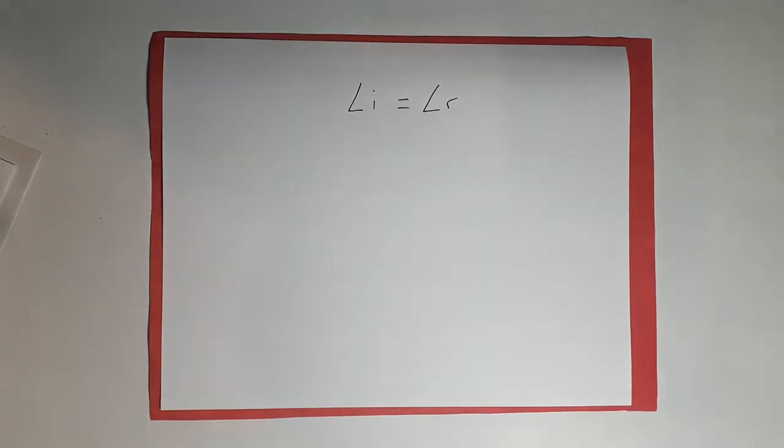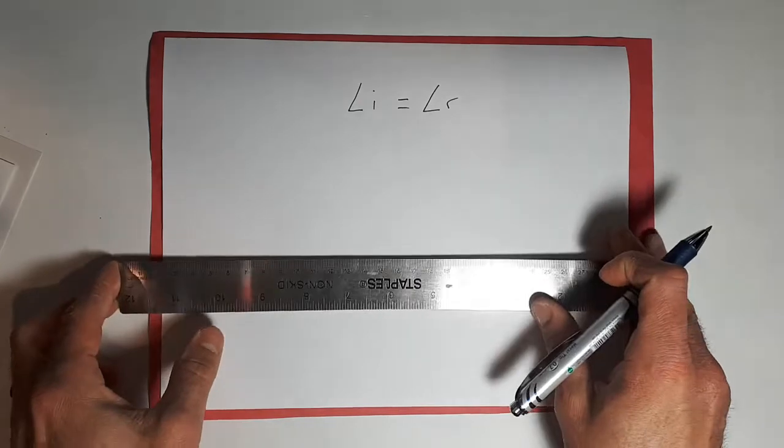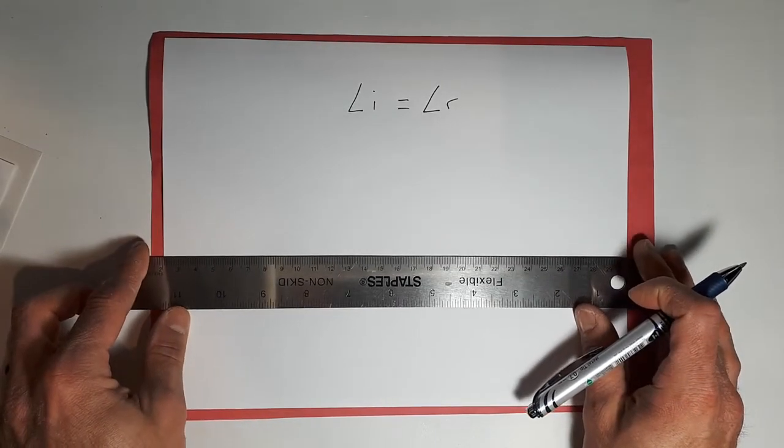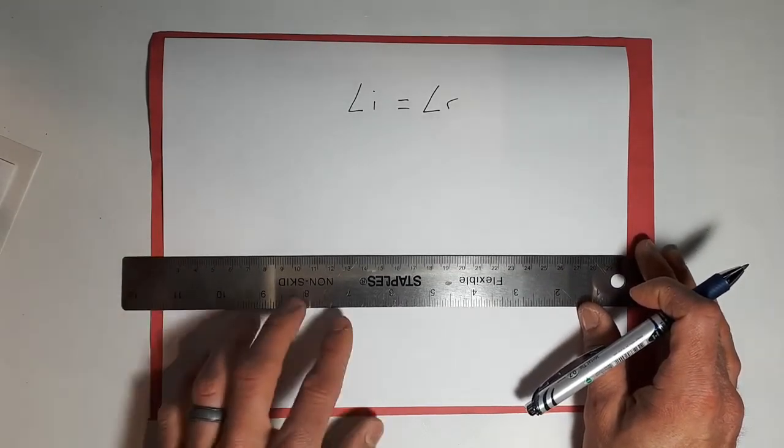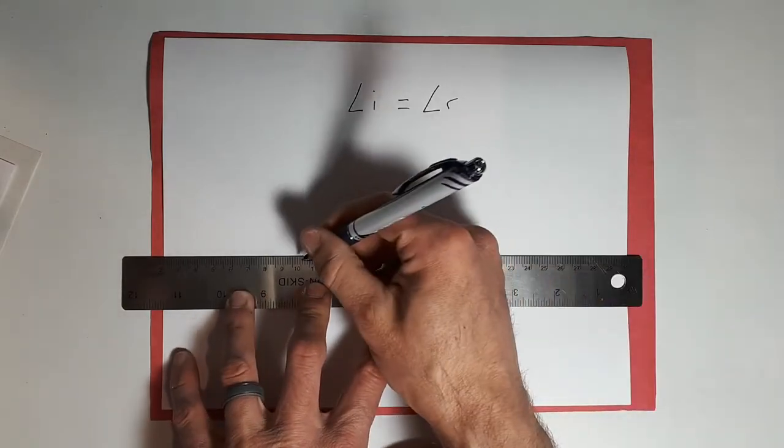Now what we mean by that, we're going to show. So I'm just going to draw a straight line here, and that's going to represent our mirror, the miroir.